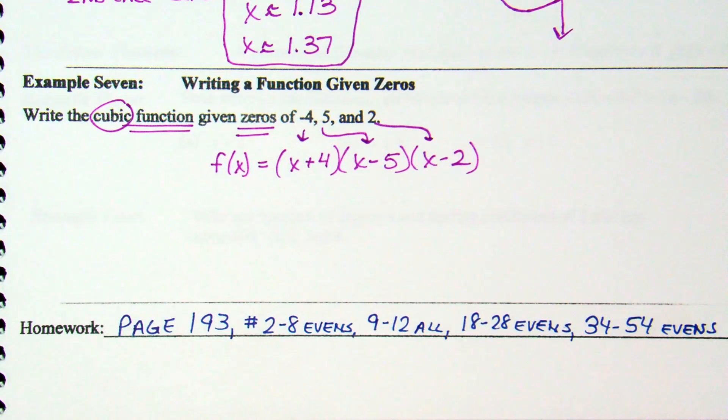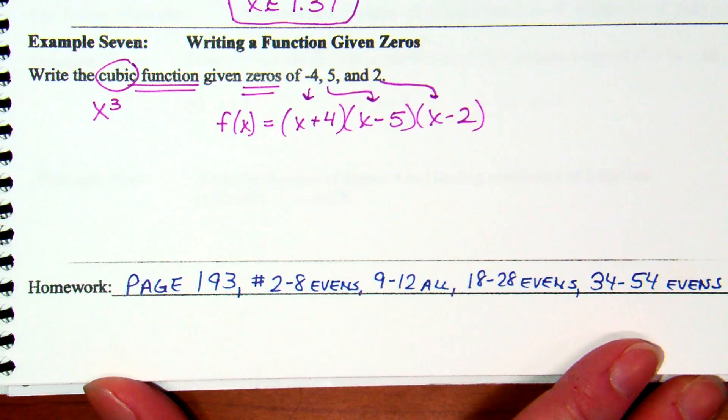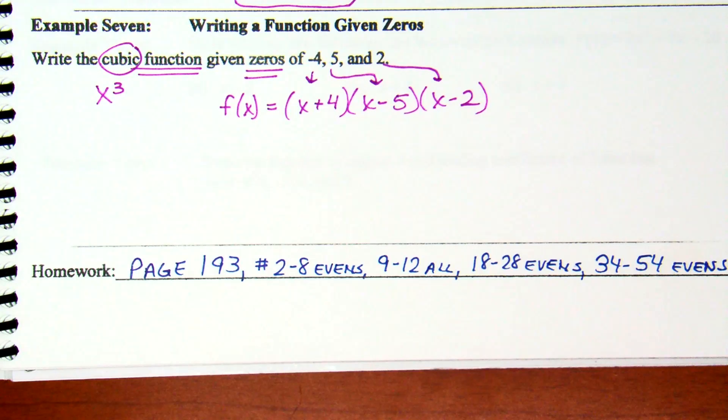Now, it did say a cubic function. So, I'm going to start off as f of x equals, y equals would be equivalent as well. And if it said cubic, what are we expecting for cubic? An x to the third. And am I going to get an x to the third? Yes. Yes, I'm going to get an x to the third.